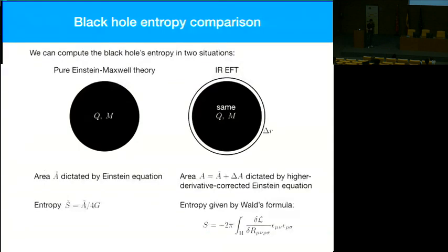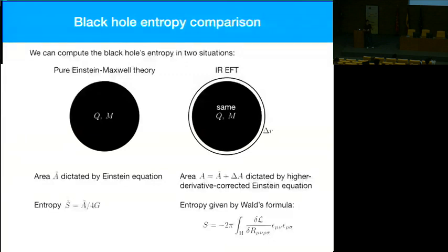Why does the entropy change? It changes for two reasons. In the theory on the left, the entropy is just the usual Bekenstein-Hawking entropy, the area over 4G. In the theory on the right, the higher dimension operators give you explicit extra contributions to the entropy from the Wald terms in the action. But there's another contribution: since we're adding higher derivative terms to the action, the Einstein and Maxwell equations change, so the black hole radius is slightly different, its area differs, and that also contributes to the entropy.